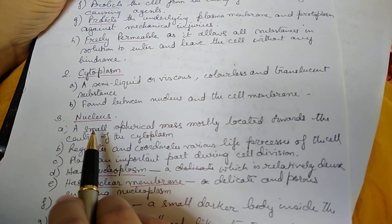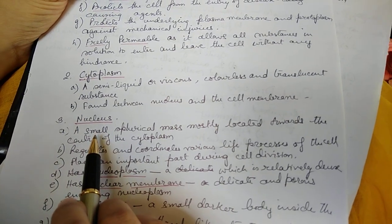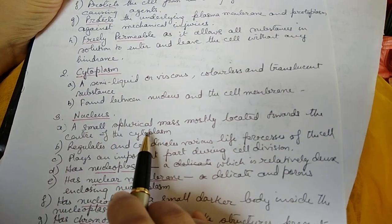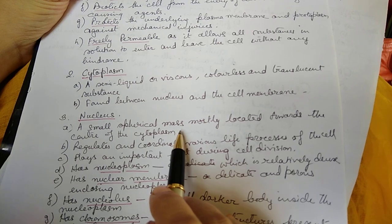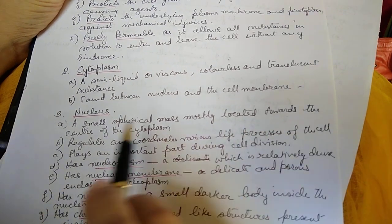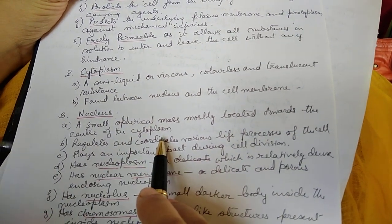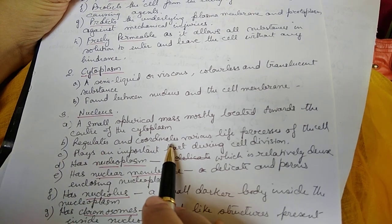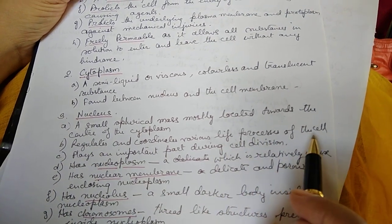Now we come to the third basic structure, that is the nucleus. It's a small spherical mass mostly located towards the center of the cytoplasm. It regulates and coordinates various life processes of the cell.